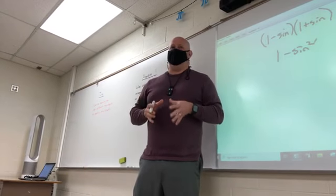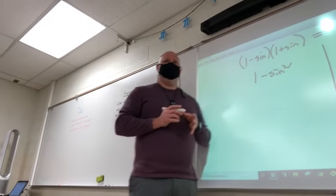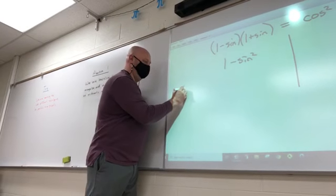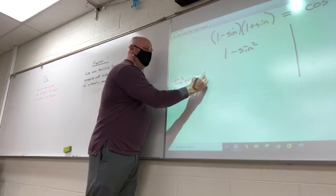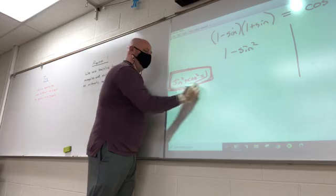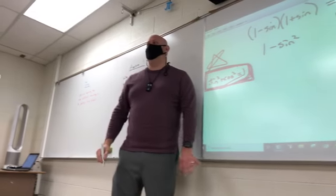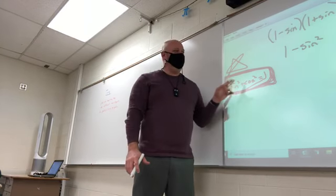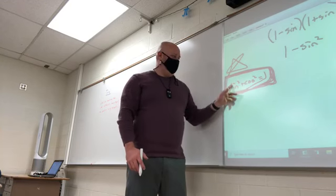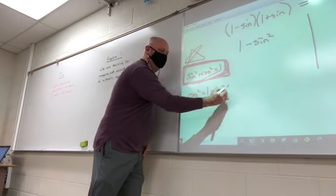Now, go to your toolbox. What's your main Pythagorean identity? Sine squared plus cosine squared equals one. This identity. You need to know this identity in multiple, multiple forms. Can I get one minus sine squared out of this identity?